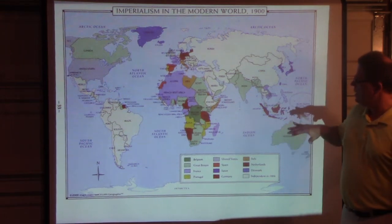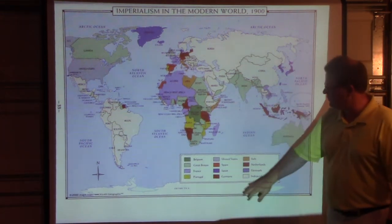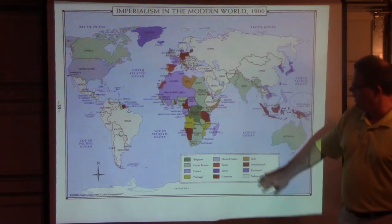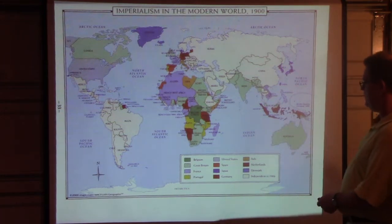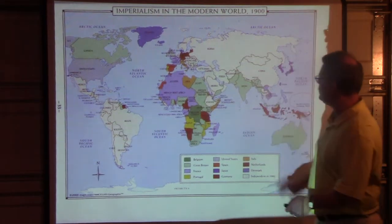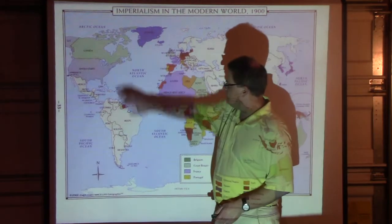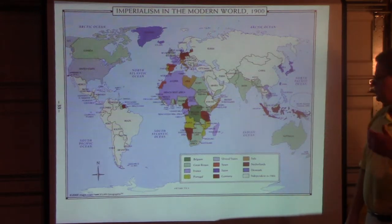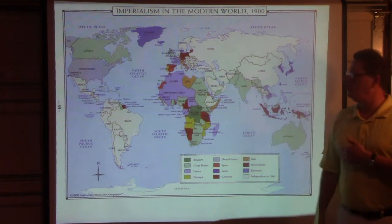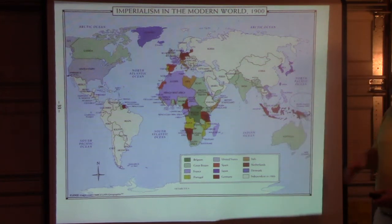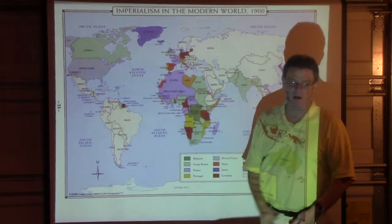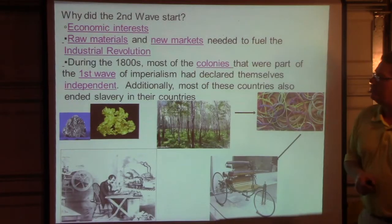Looking at imperialism around the world on the map, these different colors — yellow is Portugal, the light Carolina blue is France, the greenish color is Great Britain, and you can see Great Britain is going to be everywhere around the globe. Germany, France, Japan, and the Netherlands are going to jump into the game. The areas heavily exploited are going to be Asia, South Asia, and Africa — they're just going to be pillaged during imperialism.